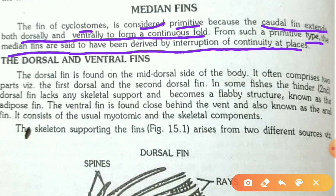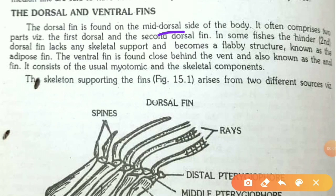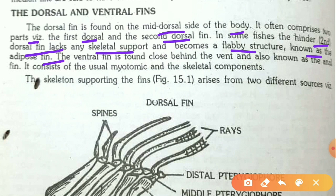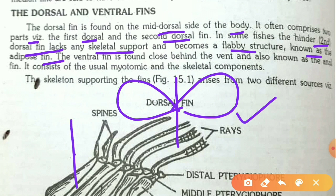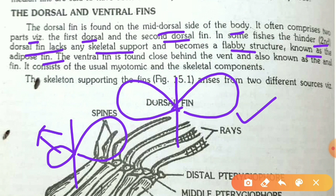The dorsal fin is found on the mid-dorsal side of the body and often comprises two parts: the first dorsal and the second dorsal fin. In some fishes, the second dorsal fin lacks any skeletal support and becomes a flabby structure known as the adipose fin. So the second dorsal fin, which is smaller and flabby due to lack of skeletal support, is known as the adipose fin.